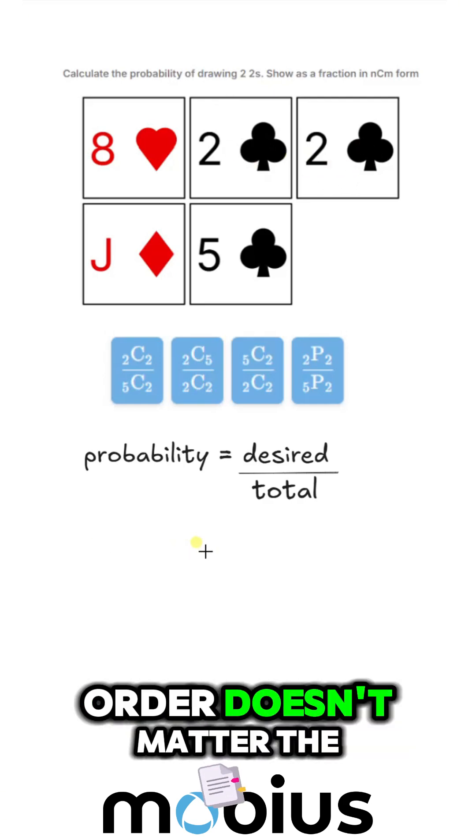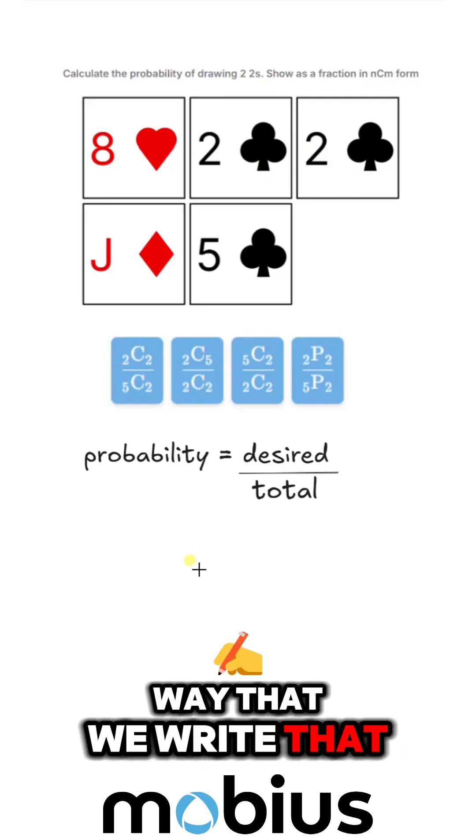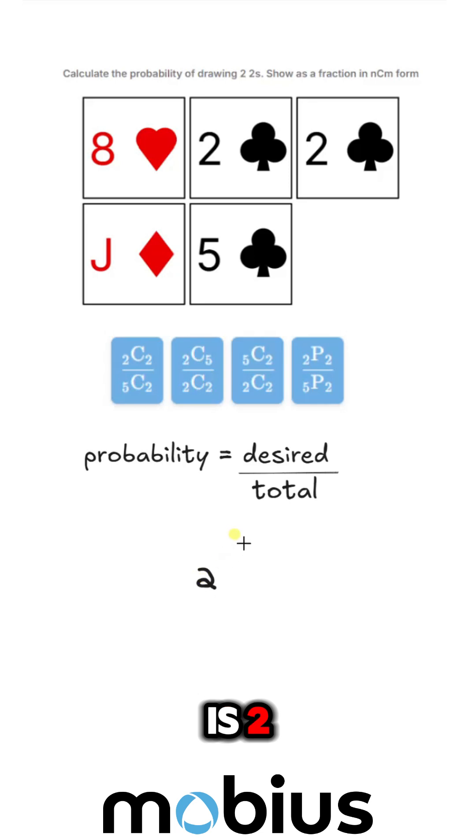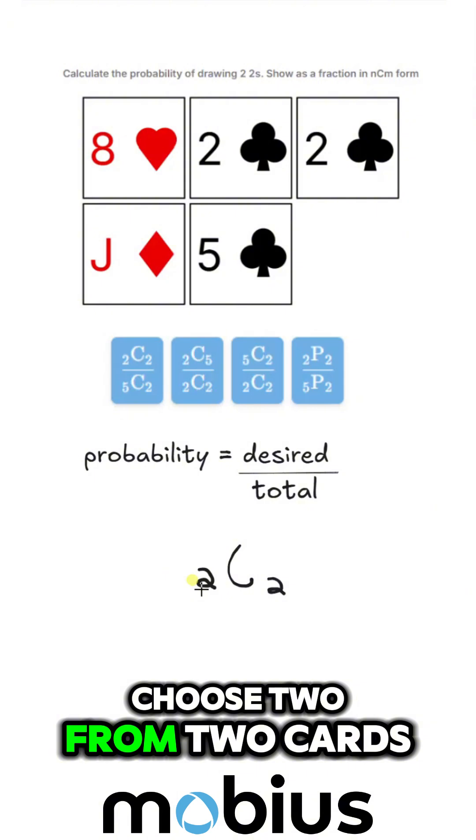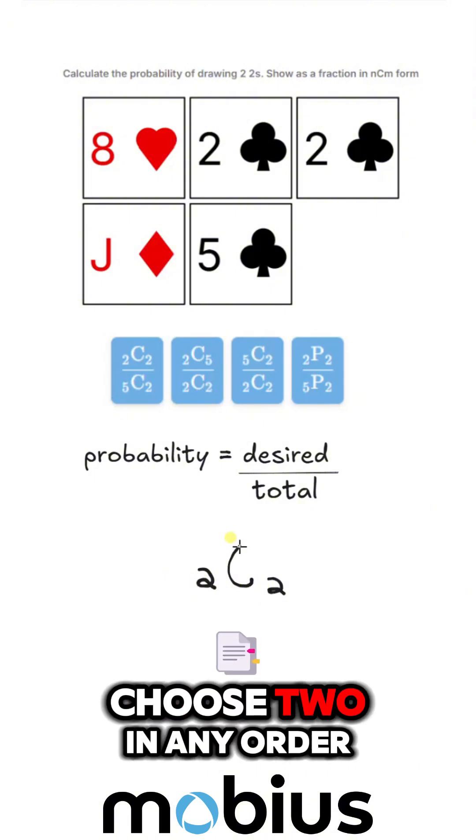We want to draw two. Order doesn't matter. The way that you write that is two choose two. From two cards, choose two in any order.